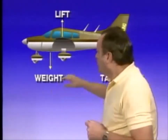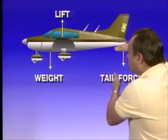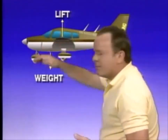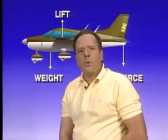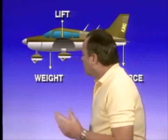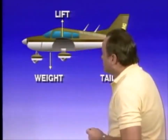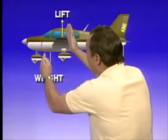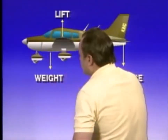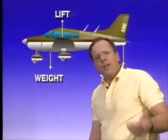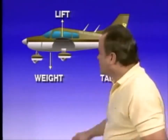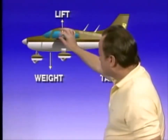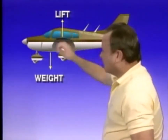As you have more down force on the tail, the airplane becomes more and more stable. What causes the down force on the tail? The difference between where the center of lift — or center of pressure — is and where the center of gravity is. You can't change the center of pressure a whole lot in an aircraft because it's pretty much designed into the shape of the wing.